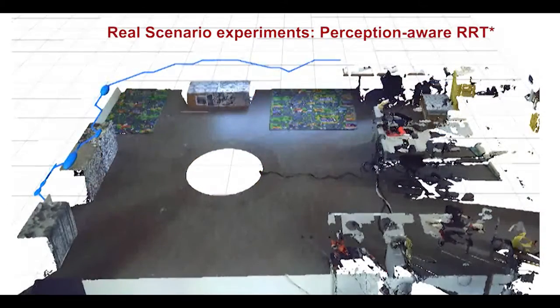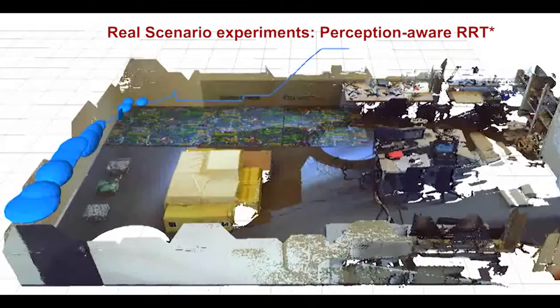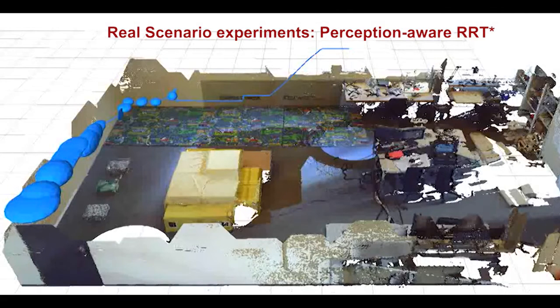In contrast, our perception-aware planner selects paths over highly textured areas. As a consequence, the pose uncertainties along the trajectory, depicted here as blue ellipses, are very small. Thus, the overall localization system is much more accurate and reliable.